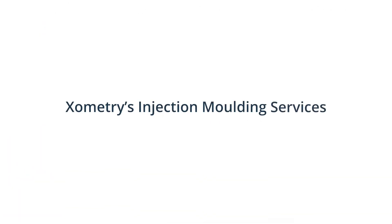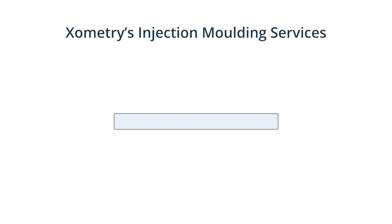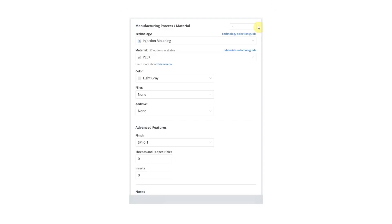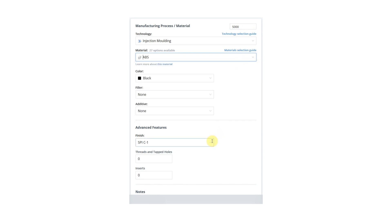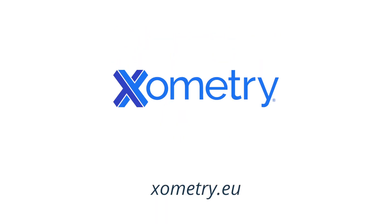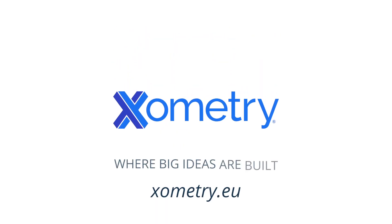Reliable processes, optimized part designs for manufacturing, and high-quality mold tooling are crucial for achieving consistently high-quality parts. Xometry will help you source your injection molded parts by providing comprehensive DFM feedback and manufacturing your parts with our vetted production partners. Simply upload your 3D model using our online platform, set the required quantity, materials, color finishes, and other specifications, and submit a quote request. Xometry — where big ideas are built.